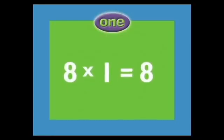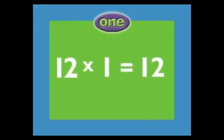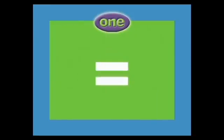8 times 1 equals 8, 9 times 1 equals 9, 10 times 1 equals 10, 11 times 1 equals 11, 12 times 1 equals 12. Then again from the top: 1 times 1 equals 1, 2 times 1 equals 2, 3 times 1 equals 3.